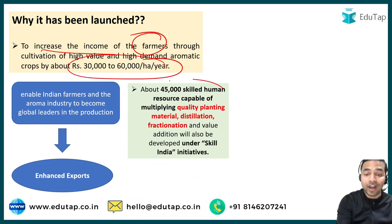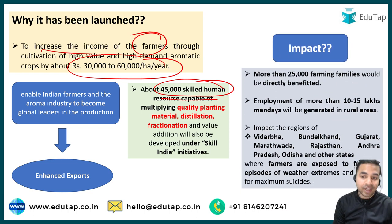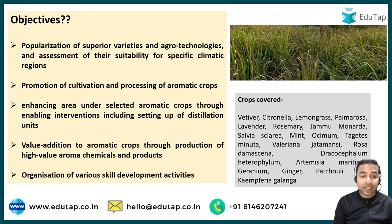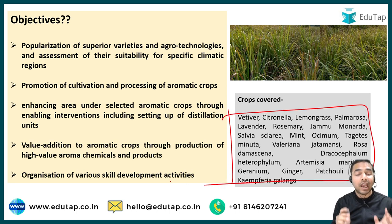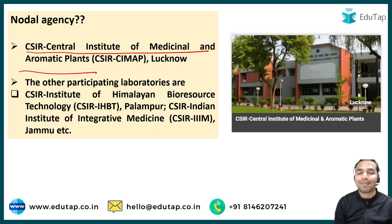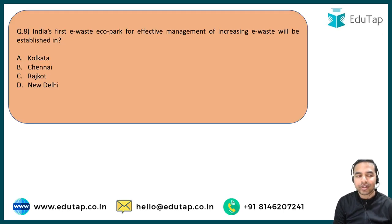The Aroma Mission aims to develop 45,000 skilled human resources in distillation, fractionation, and value addition under Skill India initiatives, and to directly benefit 25,000 farming families. The nodal agency is CSIR's Central Institute of Medicinal and Aromatic Plants based in Lucknow. Multiple CSIR participating laboratories are also involved in its implementation.